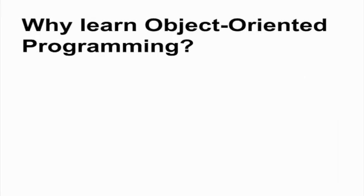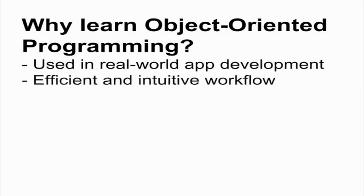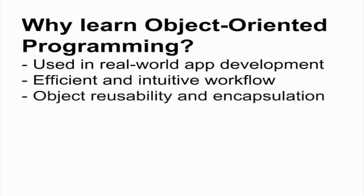Object-oriented programming is how the majority of apps are made today. It's essential to game programming and making the kinds of apps you might use on your phone or tablet. It's a good way to design programs in an efficient and intuitive manner — objects give you a high-level concept to start with so that you can design first and code later. OOP is also a good way to encapsulate data and keep components functionally separate. If you create a linked list class for one program, you can easily reuse it in another as long as the class is self-contained.